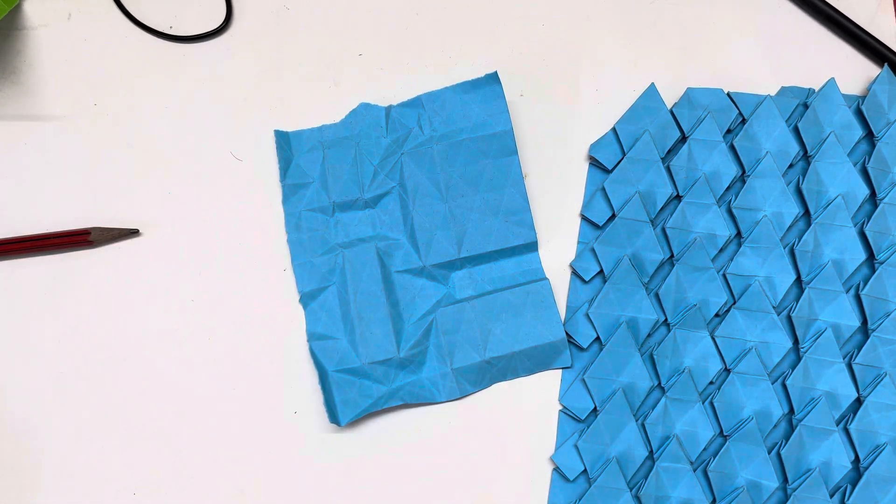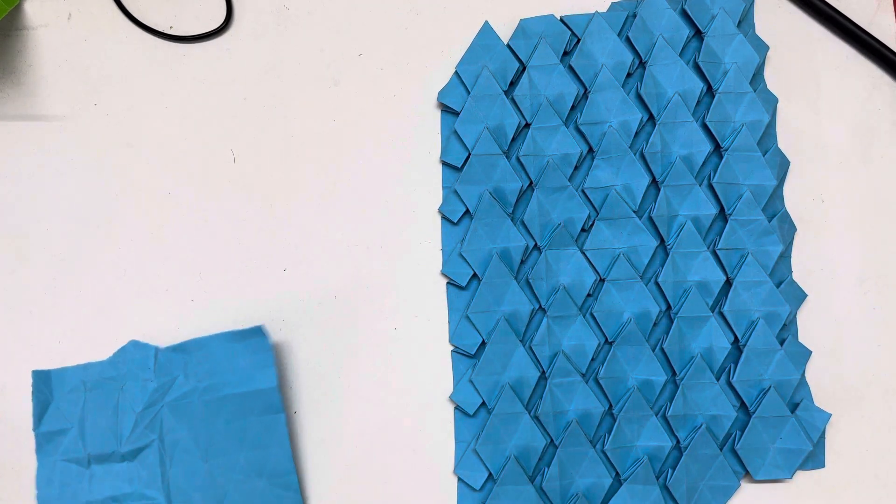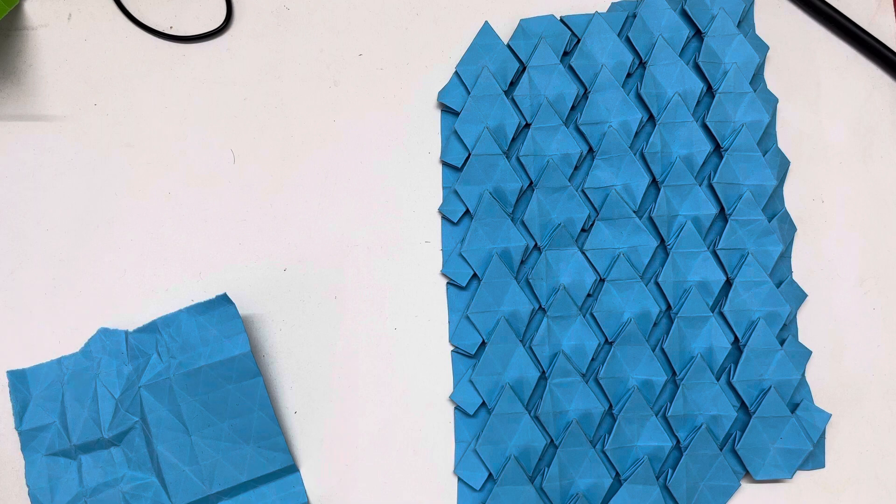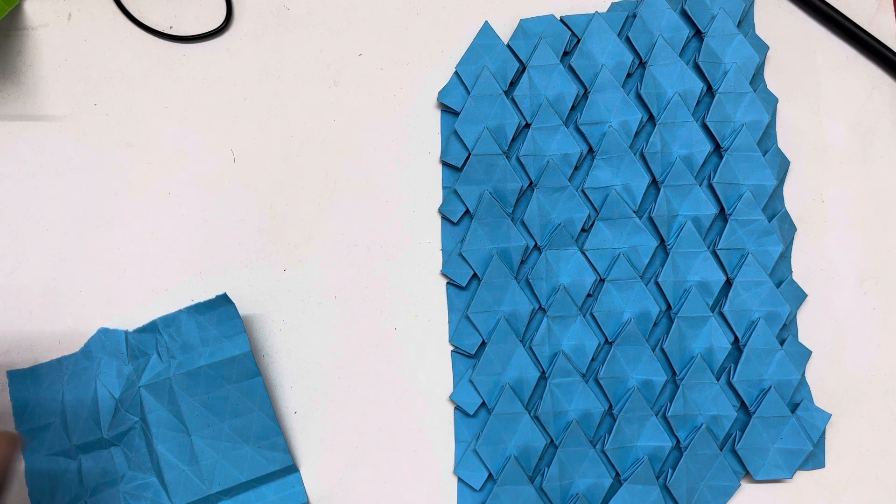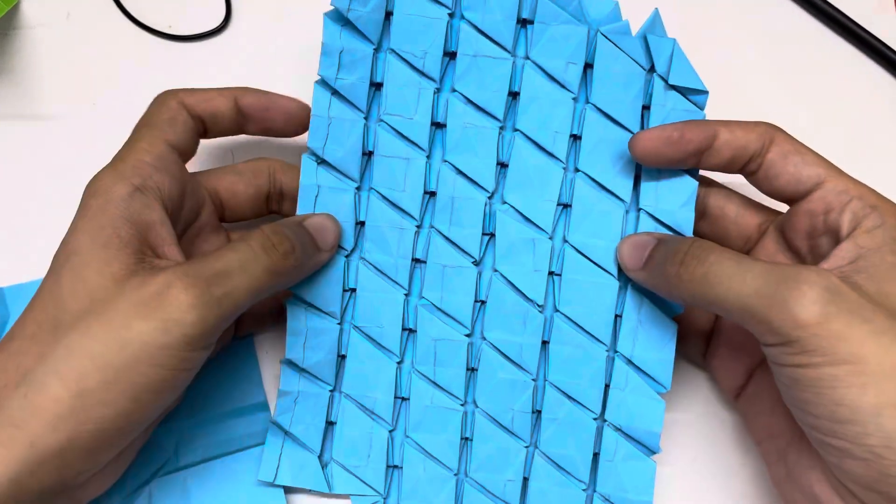Hi guys, welcome back. Today we are going to learn to fold this model. For this I used a rectangular sheet of paper with a 32 division triangular grid on it. This is the front side, this is the back side.